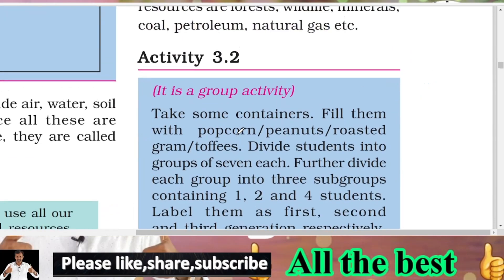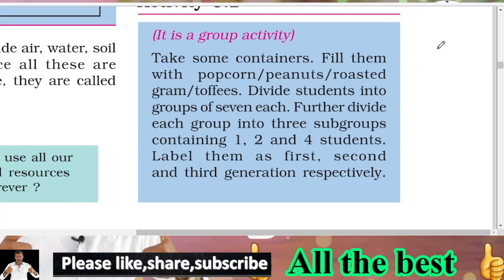Activity 3.2: Take the same quantities of some items in containers — fill them with popcorn, peanuts, roasted gram, or toffees. Divide students into groups, further divided into subgroups of two to four students. Label them as first, second, and third generation respectively.